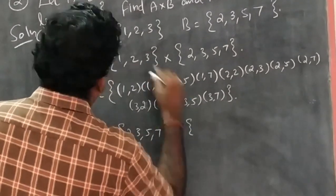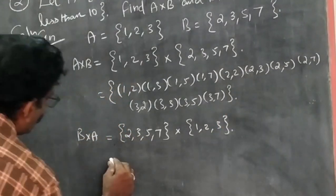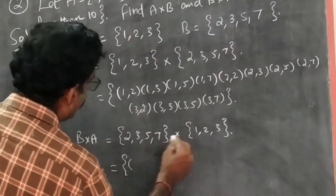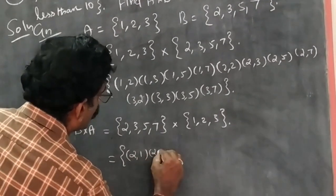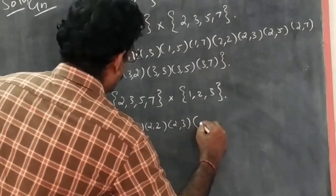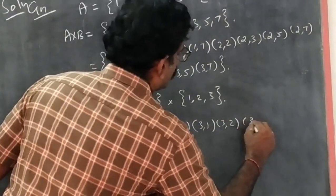B×A: (2,1), (2,2), (2,3), (3,1), (3,2), (3,3).